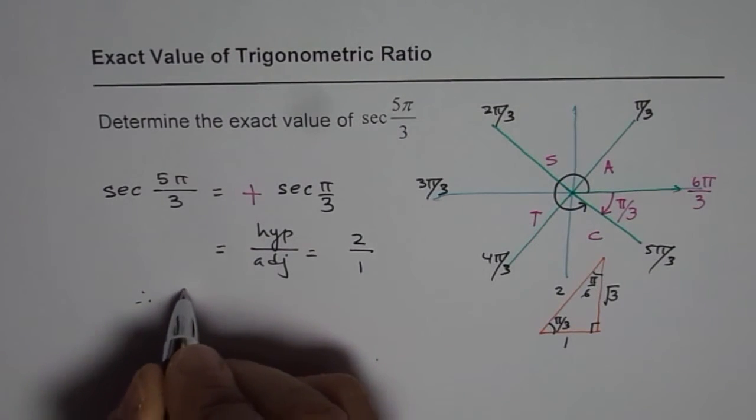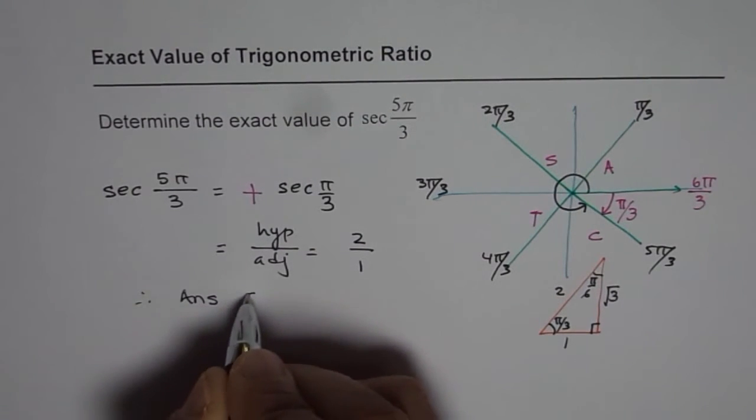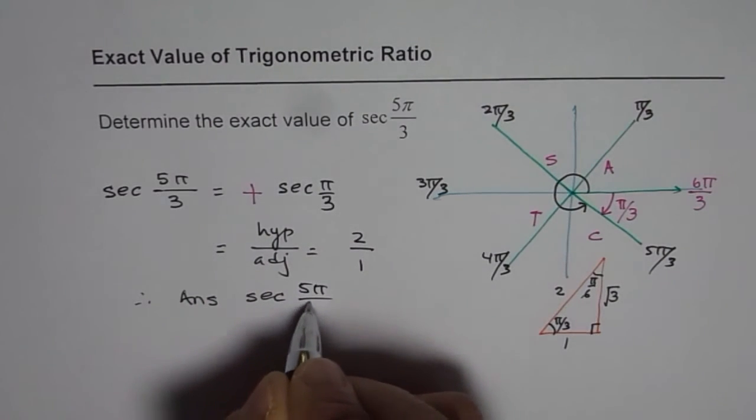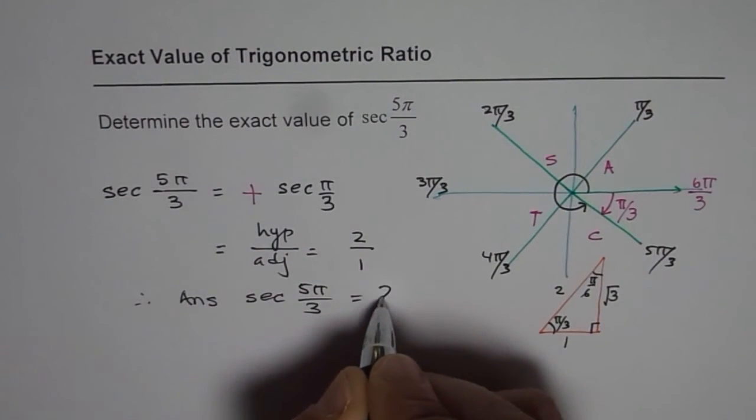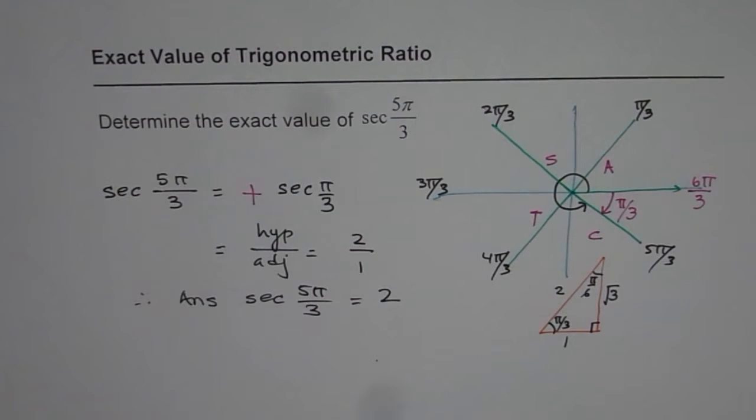So therefore we have our answer which is secant 5 pi by 3 equals 2. I hope that is clear.